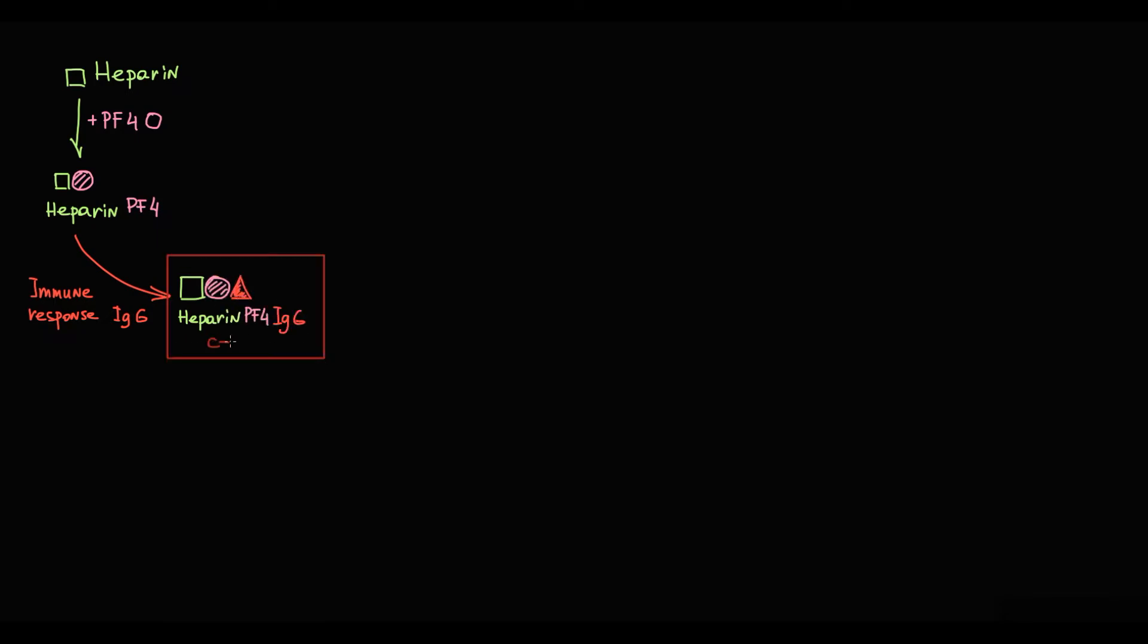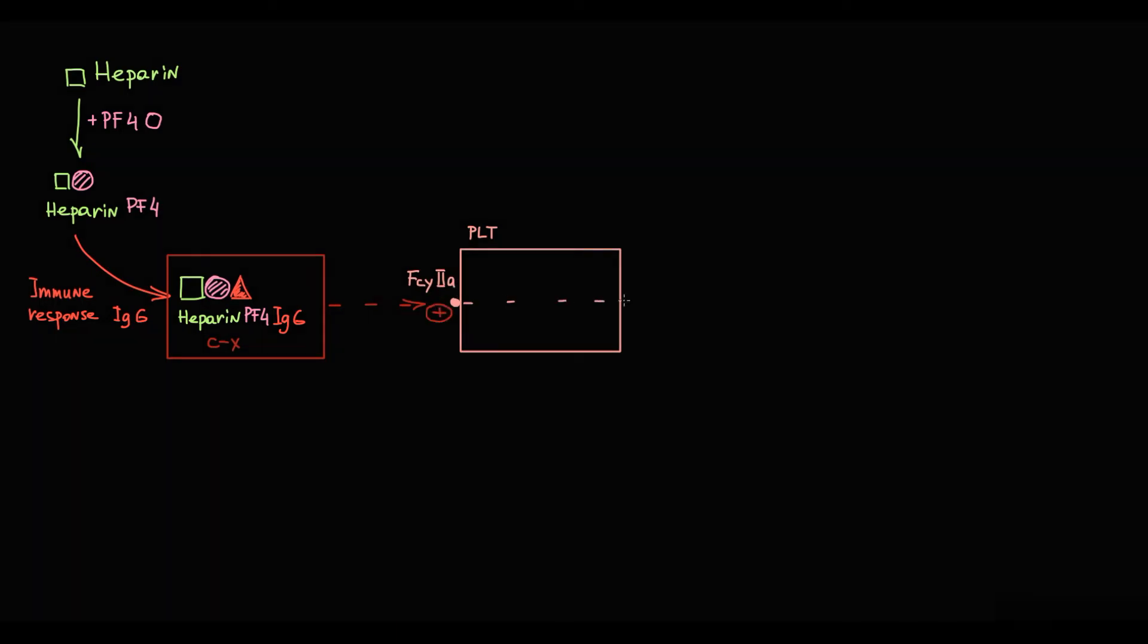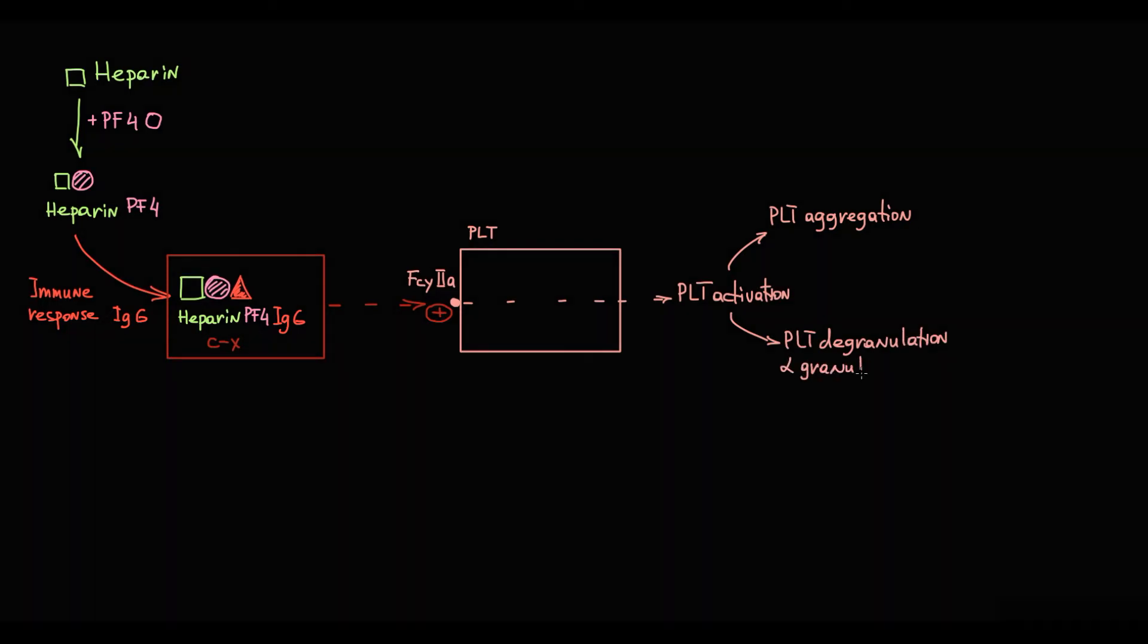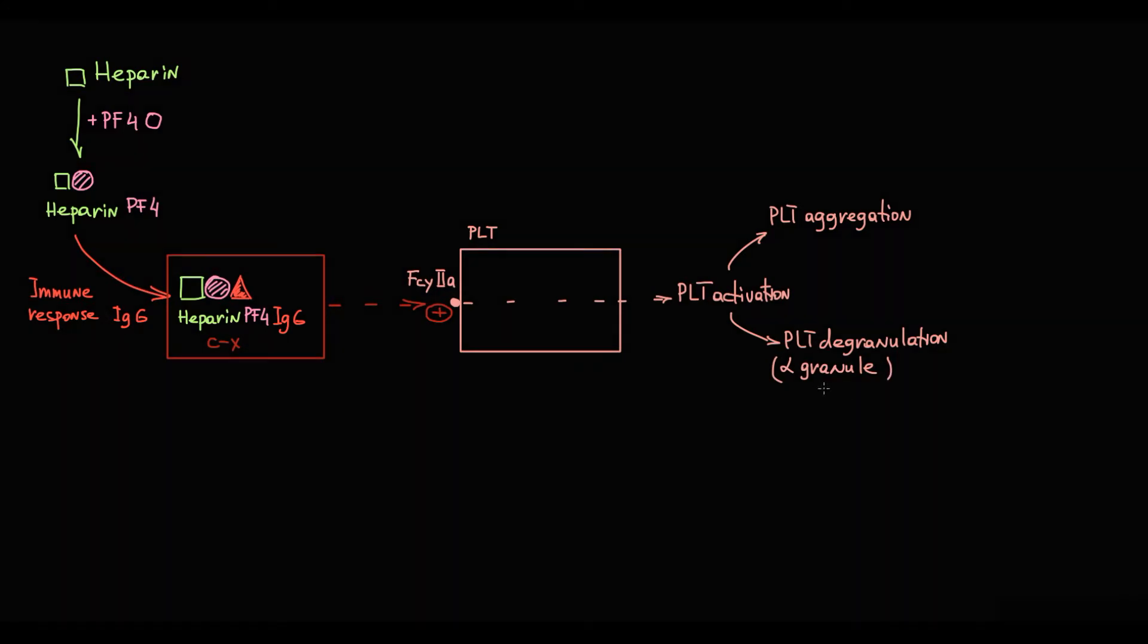Why is this complex so dangerous? First, this complex binds to the specific platelet receptor called Fc-gamma-2A receptor and activates it. Activation of this receptor activates platelets, and with activation, platelets aggregate and also degranulate. They immediately release procoagulant microparticles in very high quantity. For example, one of them are alpha granules, which are extremely prothrombotic particles. Recall that platelet factor IV is contained exactly in alpha granules.